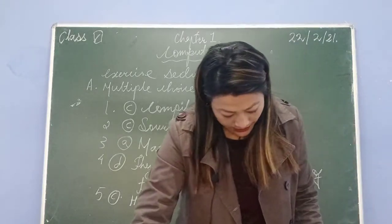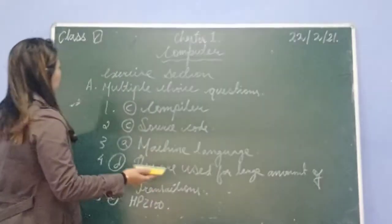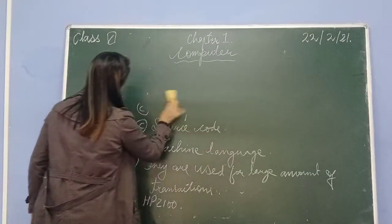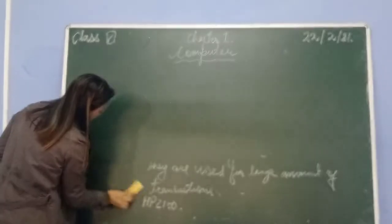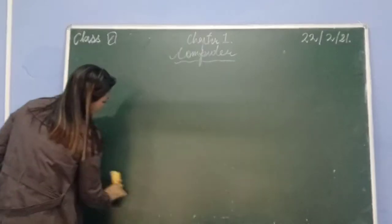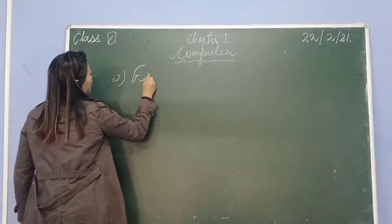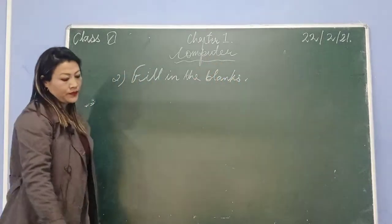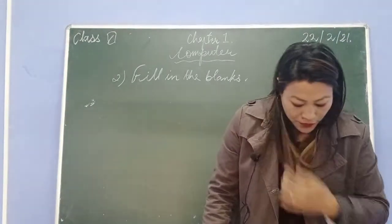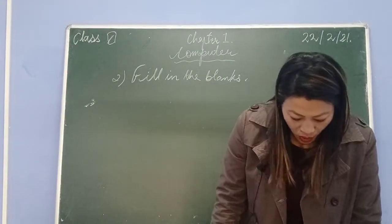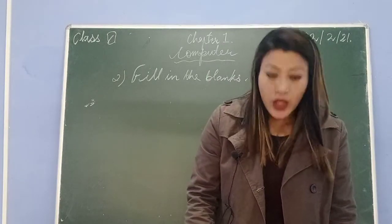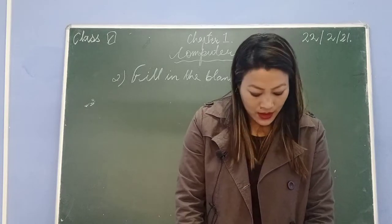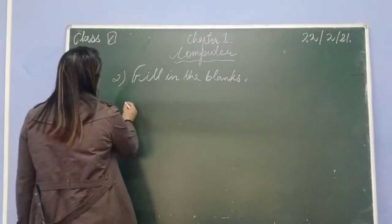Now come fill in the blanks. Children, you have your video - you can pause and write your answer in your computer copies. First one: a dash is a type of computer that has no keyboard and can also be used for making calls. Which device has no keyboard? The answer is smartphone.